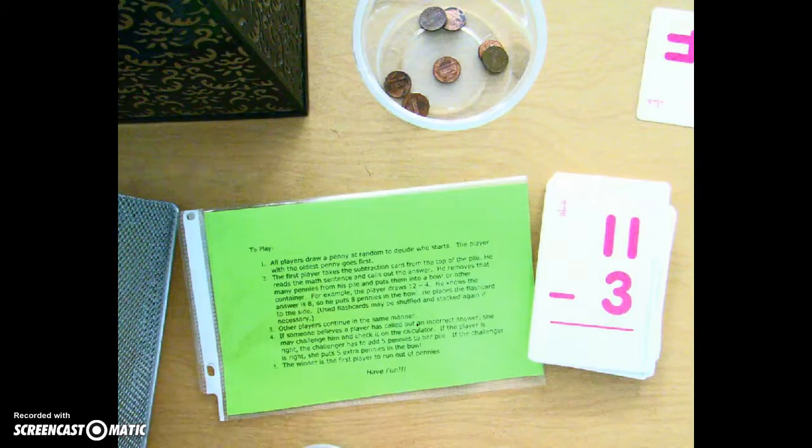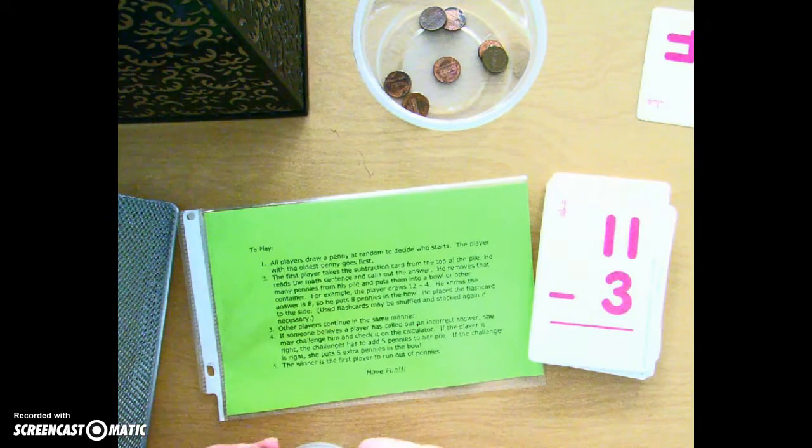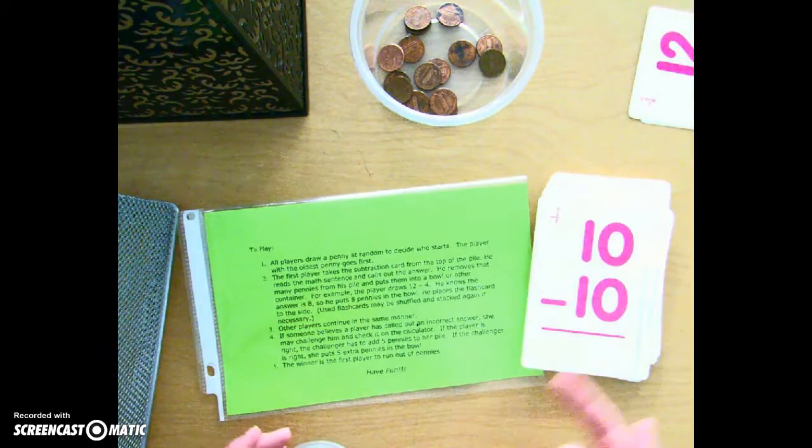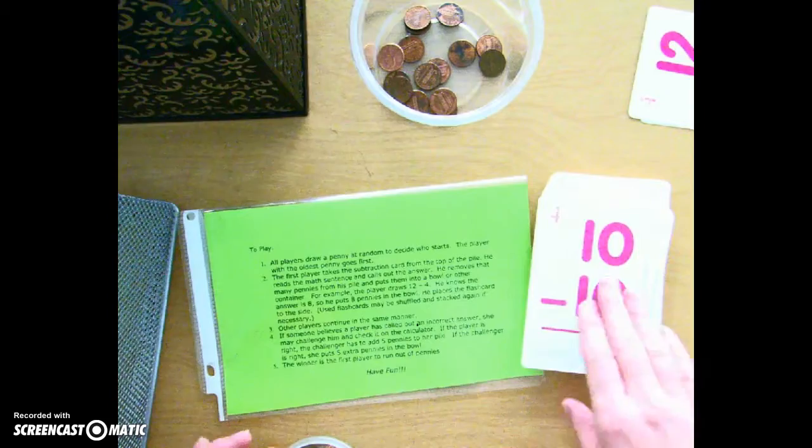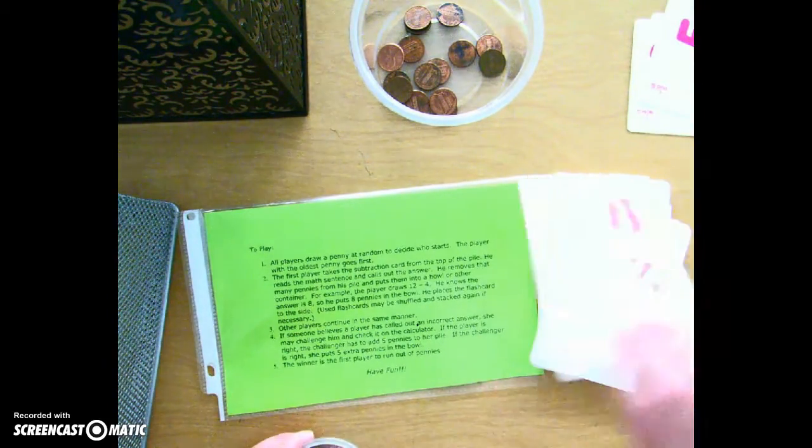11 minus 3 is 8: 1, 2, 3, 4, 5, 6, 7, 8. 10 minus 10 is 0, so I don't get to put any pennies in the pot for that one. 8 minus 8 is 0, no pennies in the pot for that one.